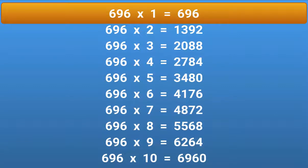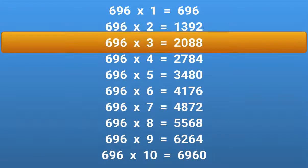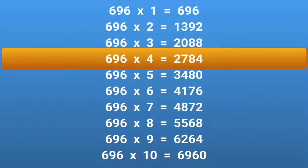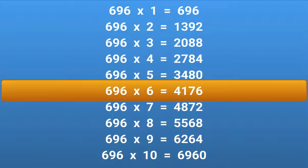696 × 1 = 696. 696 × 2 = 1392. 696 × 3 = 2088. 696 × 4 = 2784. 696 × 5 = 3480. 696 × 6 = 4176.